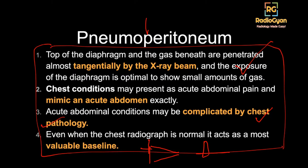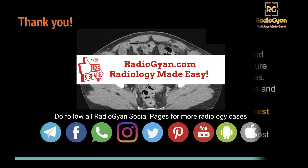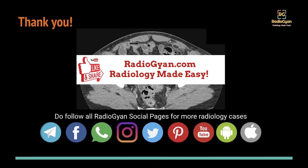Even if the chest radiograph is normal, it serves as a baseline for future investigations. So these are the four reasons — try to memorize them as they are commonly asked. This is from the old Sutton, seventh edition. To revise: tangential beam gives better contrast; chest conditions can mimic abdominal conditions; abdominal conditions can have chest findings; and the chest radiograph can serve as a baseline for future investigations.